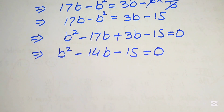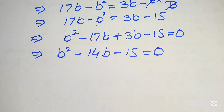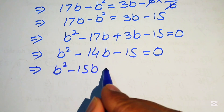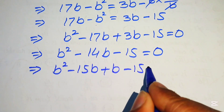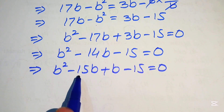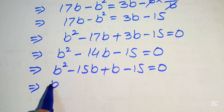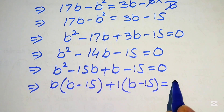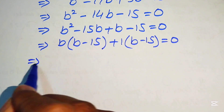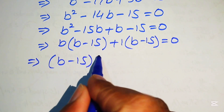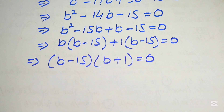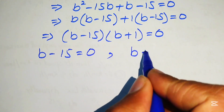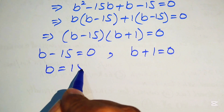We factor the quadratic: B squared minus 15B plus B minus 15 equals 0. Breaking the middle term as minus 15 plus 1, we take B common from the first two terms to get B(B minus 15), and 1(B minus 15). Factoring out (B minus 15) gives (B minus 15)(B plus 1) equals 0.